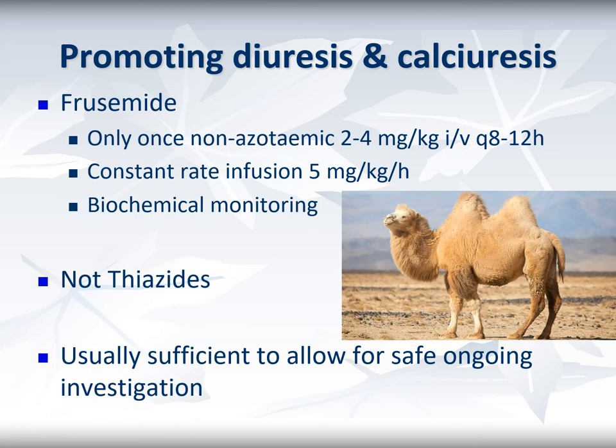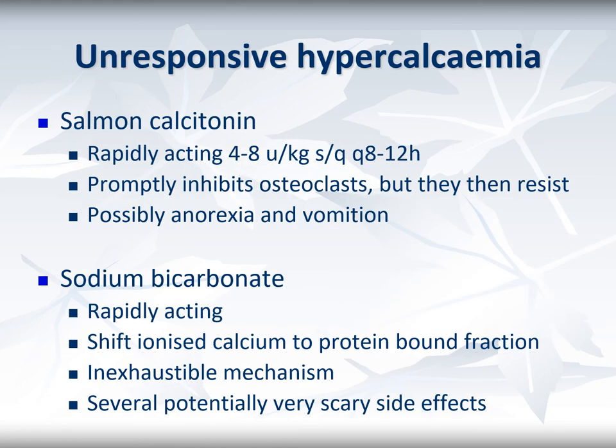If fluids are not enough to control calcium, the next step is furosemide, either intermittently or as a constant infusion, with mild benefit of constant over intermittent dosing. Thiazides are an inappropriate choice. Furosemide is usually an effective option in the medium term while investigation is completed. For very unresponsive cases, calcitonin at the stated dose promptly inhibits osteoclasts, but can subsequently become ineffective as osteoclasts can resist repeat doses by down-regulating their receptors.